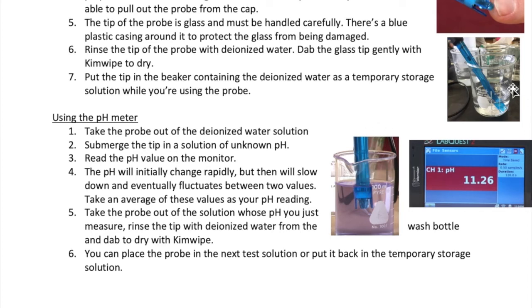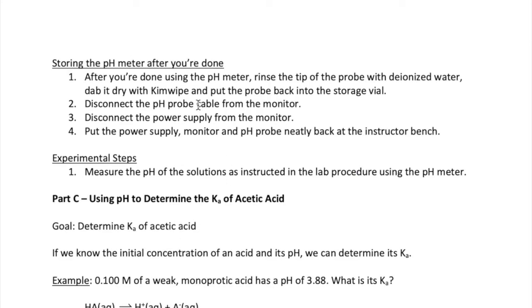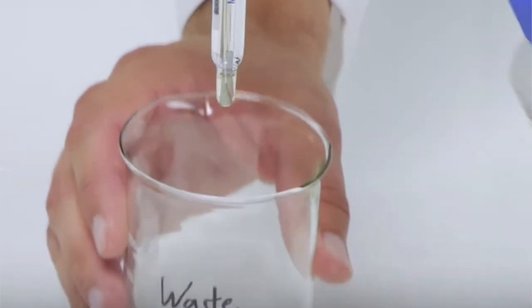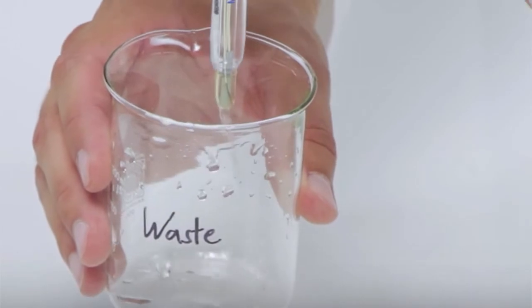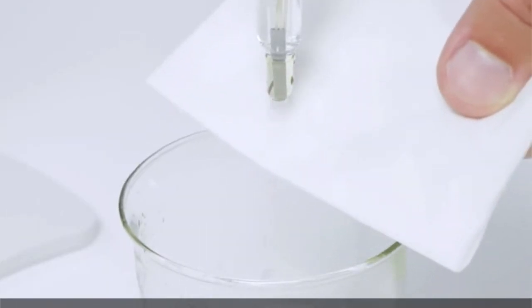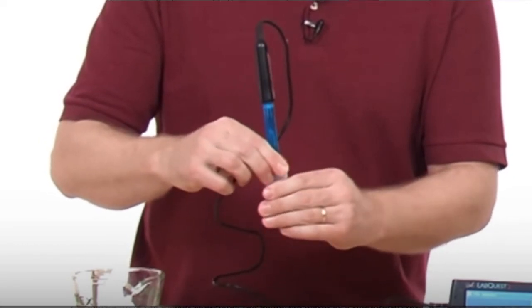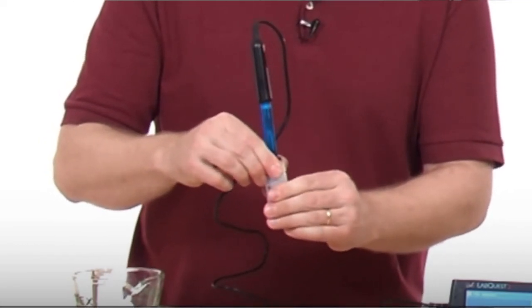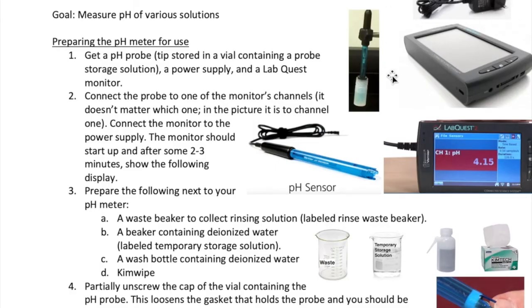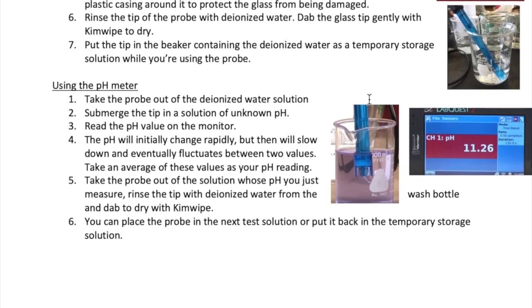Or if you're completely done with it, place it back in the deionized water beaker to store. When you're completely done with the pH meter, wash it one last time with deionized water and then dab to dry as before. Place the tip back into the storage solution in the vial that you originally started with. Disconnect all the cables and return the three equipment pieces neatly to where you originally got them.